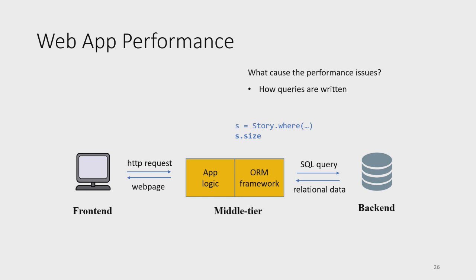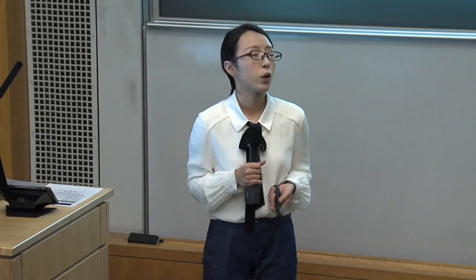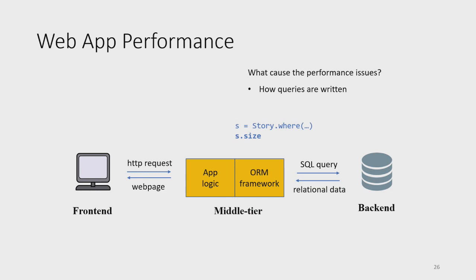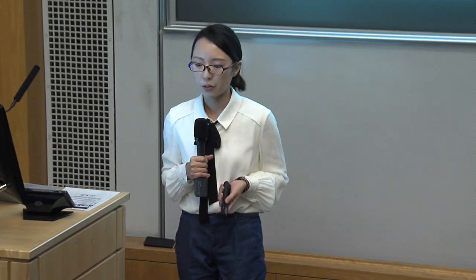The first cause is how queries are written. ORM frameworks usually provide APIs with similar functionality but very different performance. For example, in a forum application using Ruby on Rails, if you write s.size, the count of stories is computed using in-memory objects. But if you write s.count, it issues an extra COUNT query to the database. These two APIs have the same functionality, but count is less efficient than size because of this extra query.